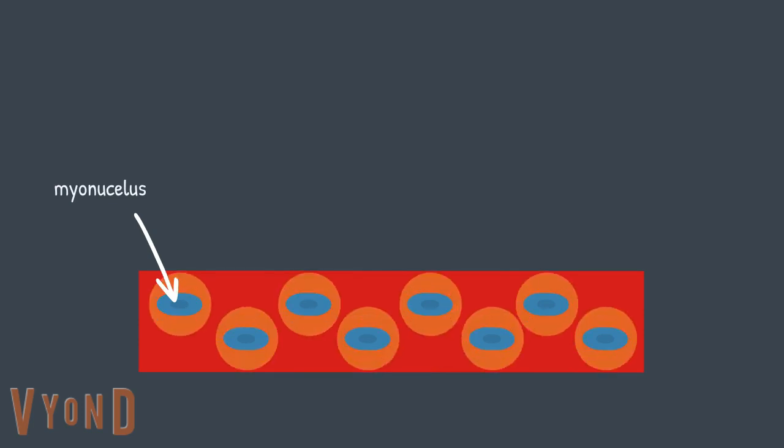The reason for this is because each myonucleus of a muscle fiber controls the protein synthesis and breakdown over a specific volume of the muscle fiber, called the myonuclear domain.